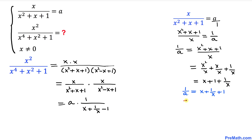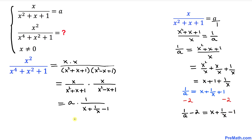We want to write this in terms of x + 1/x - 1, so let's subtract 2 from both sides: 1/a - 2 = x + 1/x + 1 - 2, which gives 1/a - 2 = x + 1/x - 1. Thus our expression becomes a · 1/(1/a - 2).